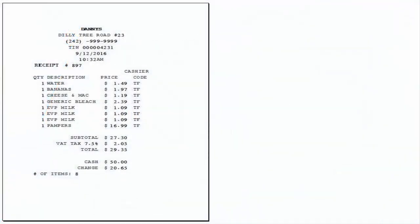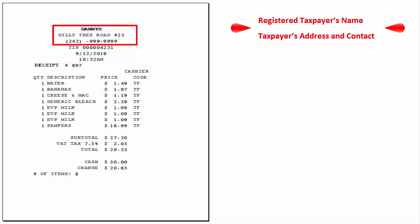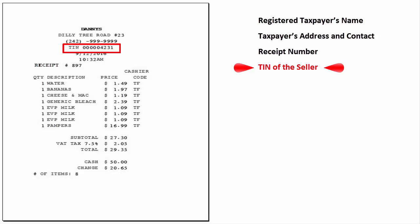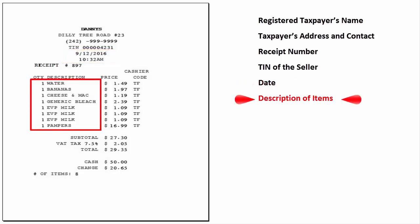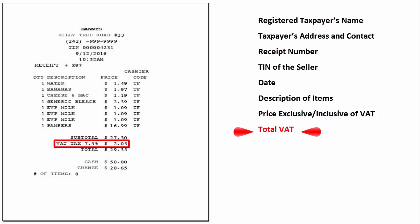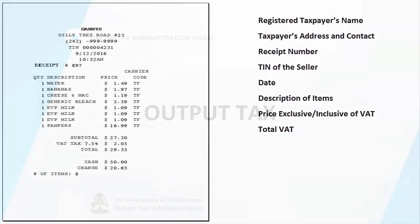A tax receipt must be issued for sales made to a non-registered person. All tax receipts should include the registered taxpayer's name, address and contact details, the receipt number, the date, the description of items, the price exclusive or inclusive of VAT, and the total VAT. Information from these invoices and receipts will be used to complete the output tax worksheet.